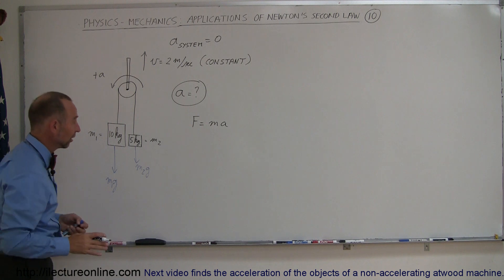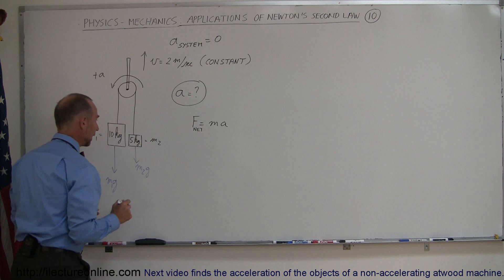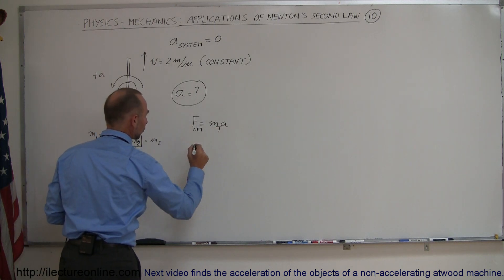And of course, in this case, the F, or we should say F_net, is equal to Ma for the whole system. And that would be mass total because there's more than one mass.